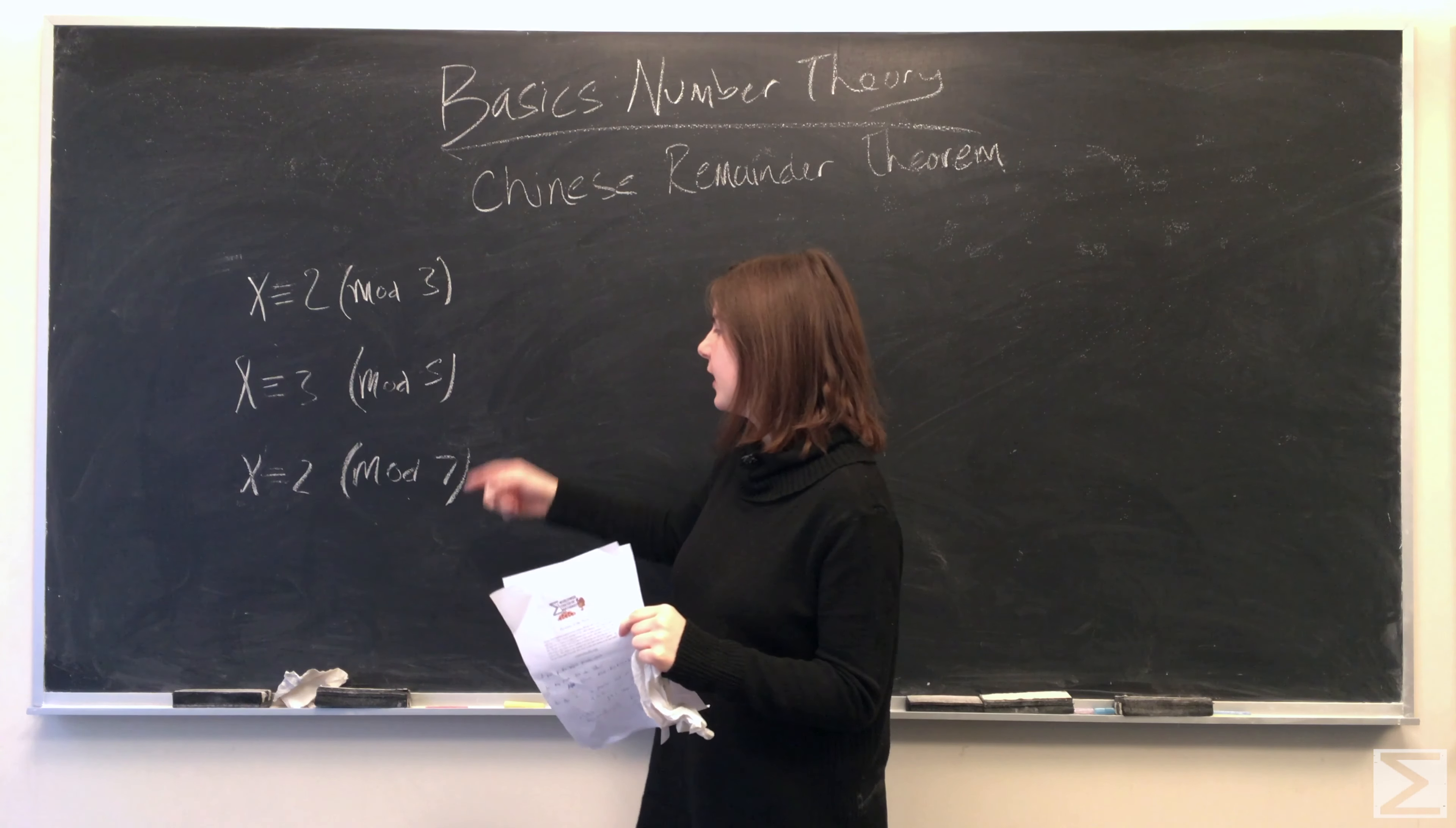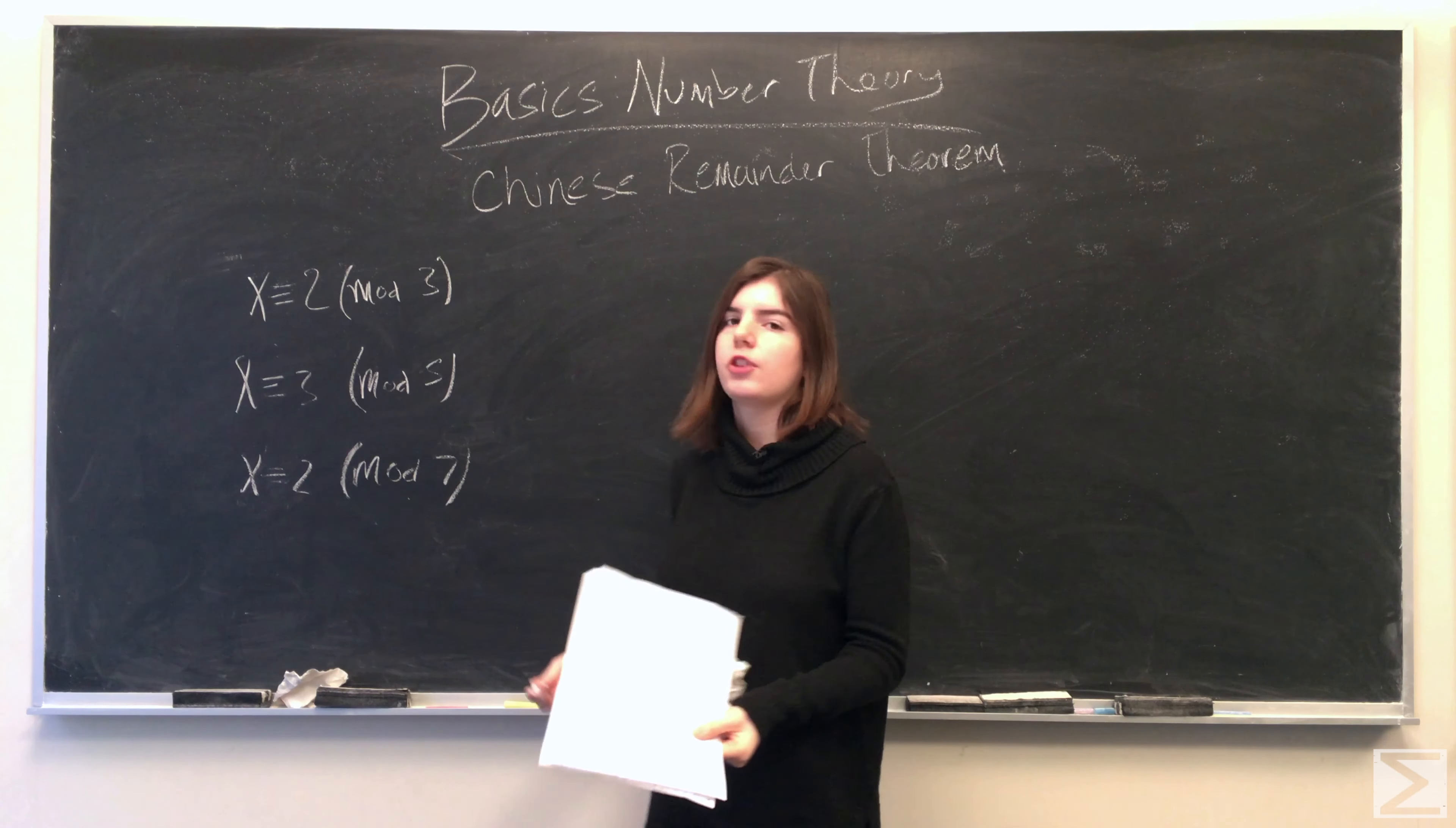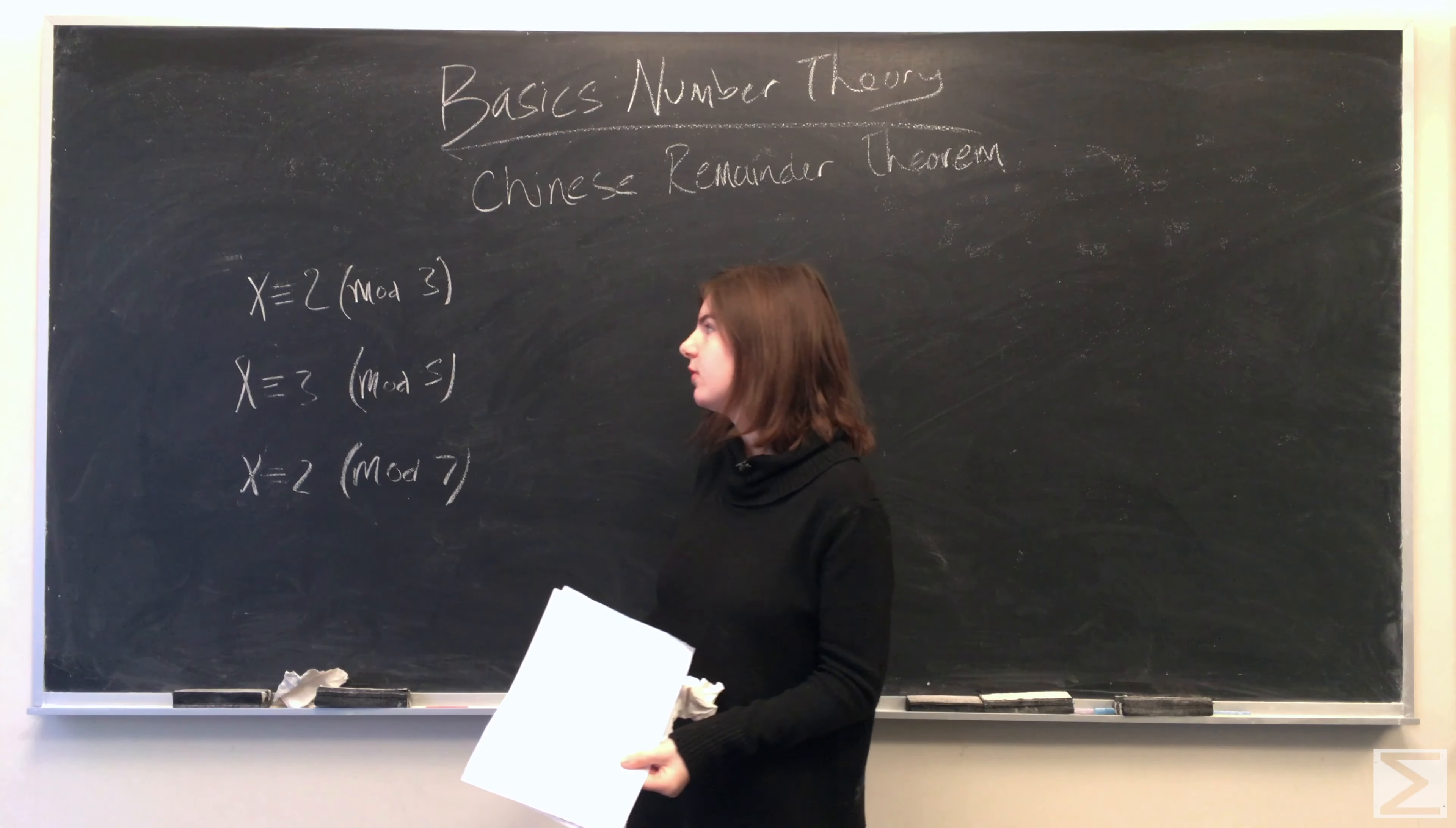Then this system of congruences has a unique solution modulo big M, which is equal to the product of all the little m's. And the best way to understand the Chinese remainder theorem is to go through examples, which is what we're going to do. So since 3, 5, and 7 are all relatively prime, we can use the Chinese remainder theorem to solve this system of linear congruences.